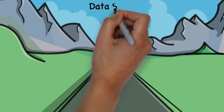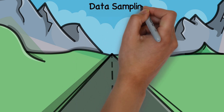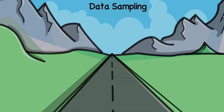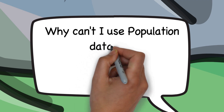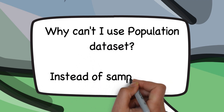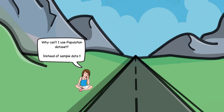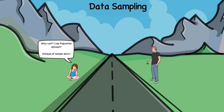Now we will move ahead with data sampling, which is nothing but a process of extracting a sample out of a population. But you must be thinking, why is there a need of getting a sample out of a population? Isn't it a lot of hassle and a tiring process? Why can't we just go for the entire population instead of a sample?